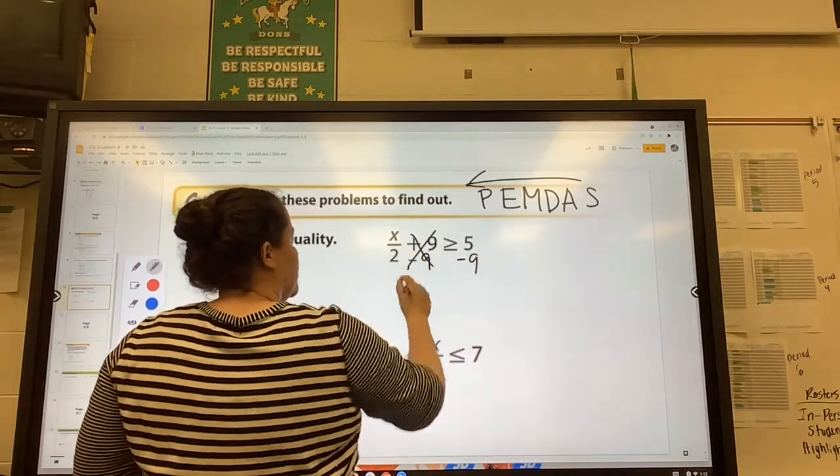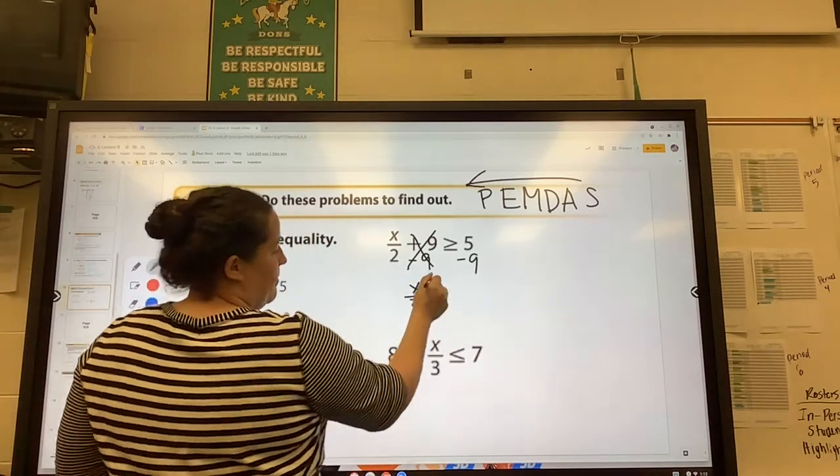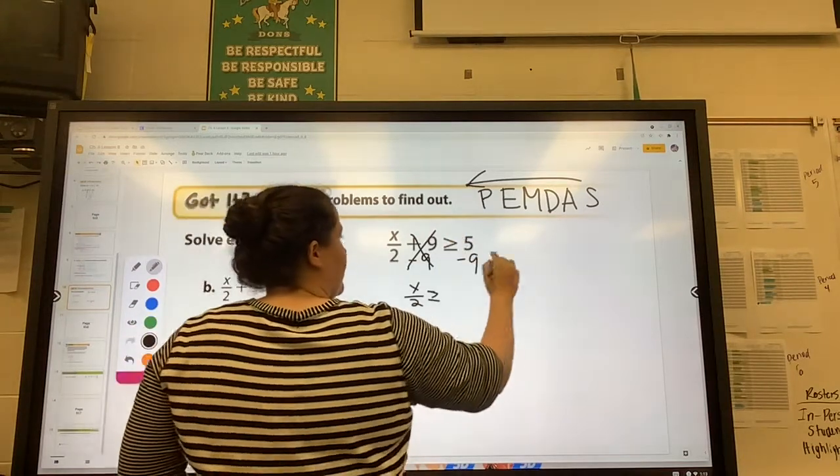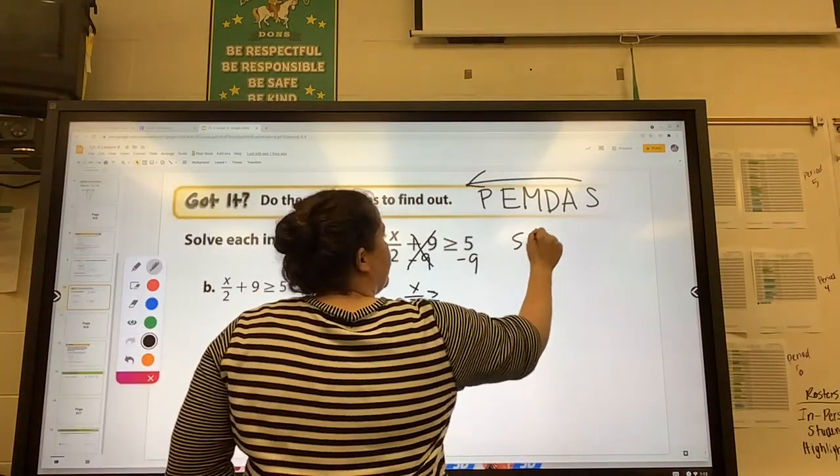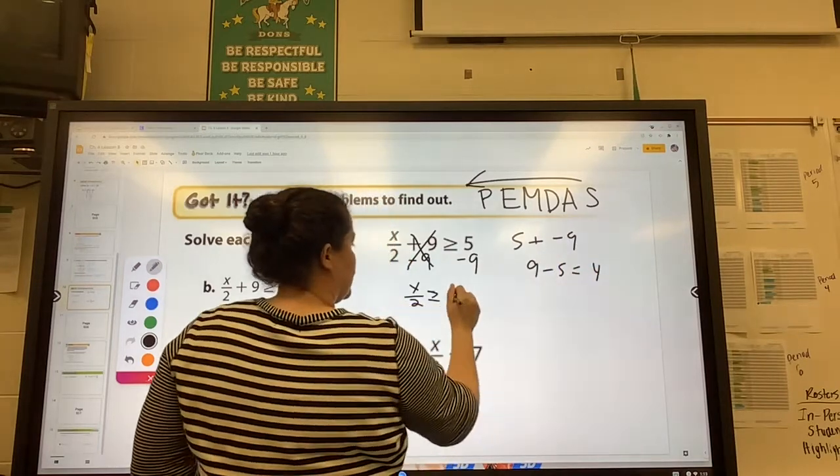Those will cancel. We'll be left with x over 2, equal—not equals—is greater than or equal to, right? We keep our sign. 5 minus 9, it's 5 plus negative 9. 9 minus 5 is 4. So this is negative 4.